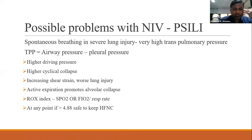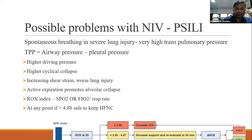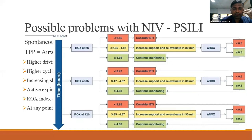Another concept in using HFNC is the ROX index — the ratio of SpO2/FiO2 to respiratory rate. At any point in time, if the ROX index is more than 4.88, it is safe to keep monitoring the patient on HFNC. We calculate ROX at 2 hours, 6 hours, and 12 hours. If the ROX index is less than 2.85 at 2 hours, you should consider intubation. If it is between 2.85 and 4.88, re-evaluate and increase support. At 6 hours, if it is less than 3.47, consider intubation. At 12 hours, if it is less than 3.85, consider endotracheal intubation. Don't wait for the patient to worsen or get tired.